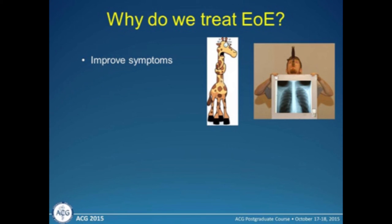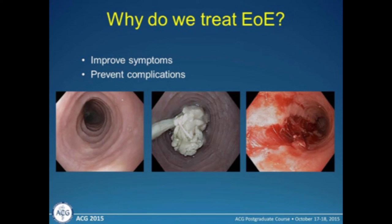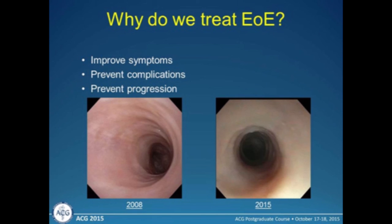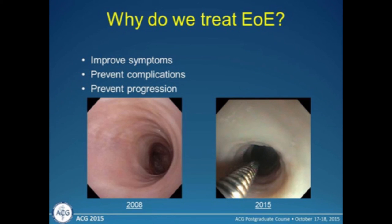Why are we going to treat this entity? In the short term, we can improve symptoms — chest pain, reflux-type symptoms, and dysphagia will generally get better. We also want to prevent complications. Here's somebody with a ringed esophagus — just from the passage of the endoscope, this mucosa is very friable and splits very easily. And finally, to prevent progression. Untreated EOE will go on to further narrowing of the esophagus. Here's the same patient from 2008 and 2015 — what you really see is how narrow they've become. That's the tip of a Savary wire. We could pass the adult scope in 2008; here they are in 2015.